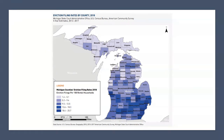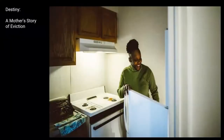Why I'm bringing up the lack of affordable housing for extremely low-income families and the eviction rate and possibility of homelessness is to show why source of income protection is overdue and should be adopted.